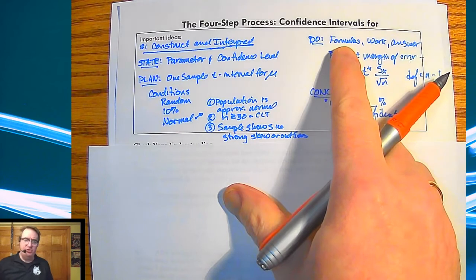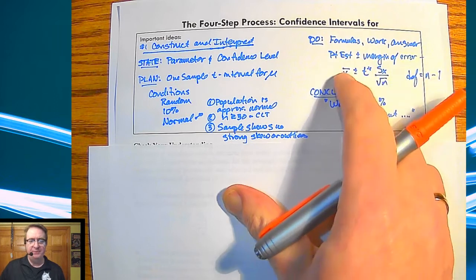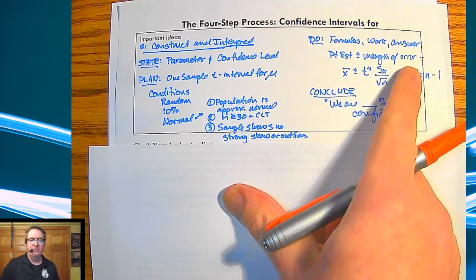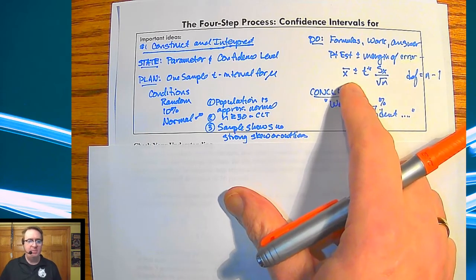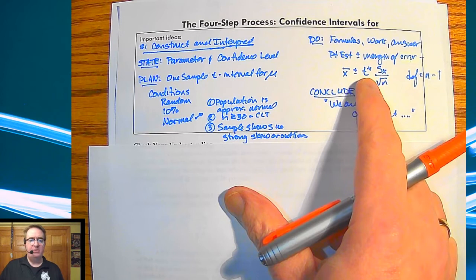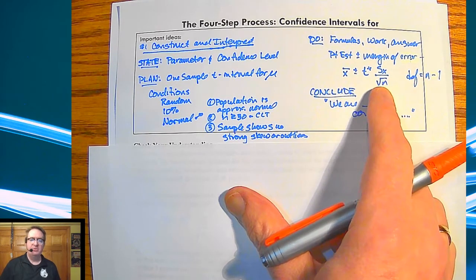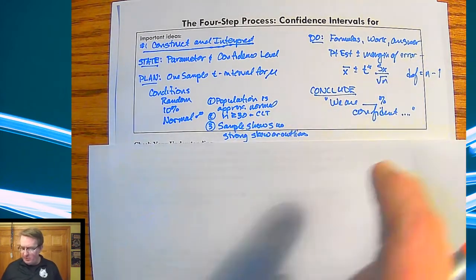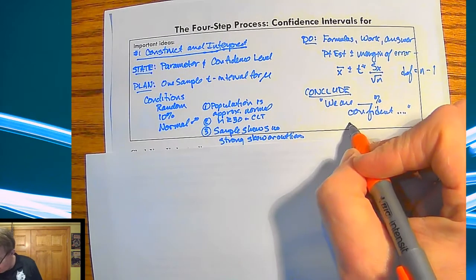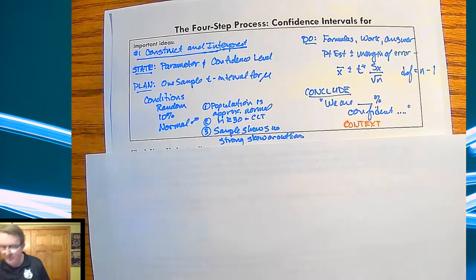For Do, you're going to show your formulas, show your work, do your answers and formulas. Remember both general and specific. So here we've got point estimate plus or minus margin of error. So that's the general one. Here's the specific one: x bar plus or minus t star times the standard error for your sample divided by square root of n. Degrees of freedom is always in this case going to be n minus one. And then for your conclusion, we are blank percent confident that, and just always make sure you include context, because without context, what's the point.